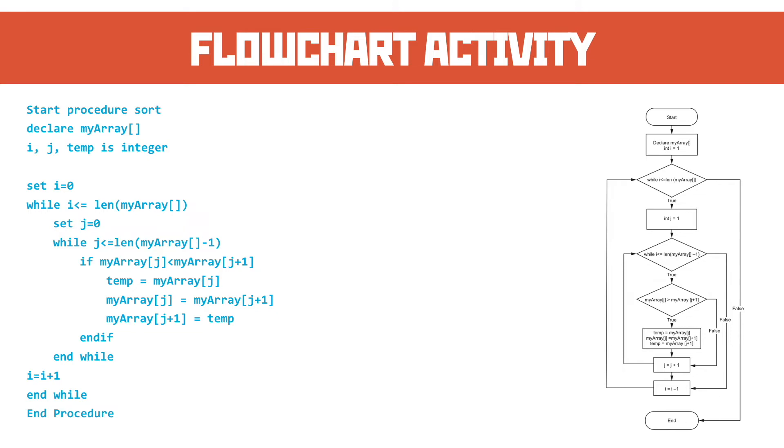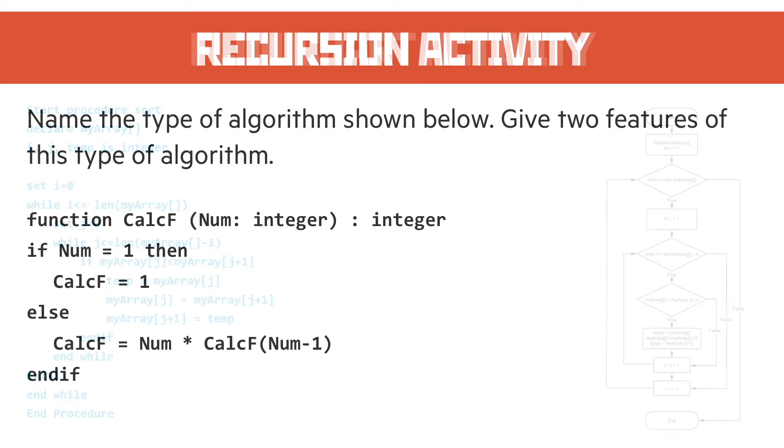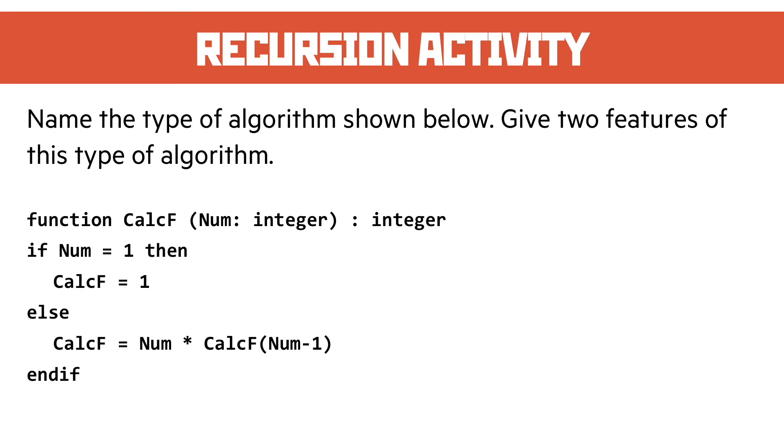The recursion activity - it gives it away a little bit by me titling it recursion activity, but the question is: name this type of algorithm and give two features of it. You'll see that on the penultimate line it calls itself, so what that means is it's a recursive algorithm.